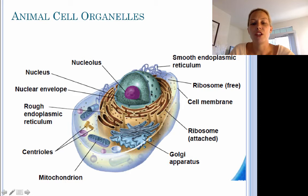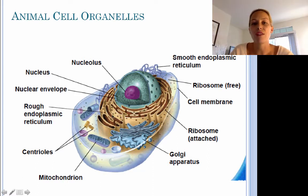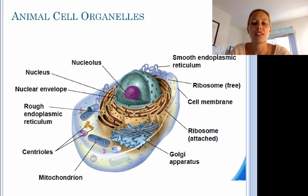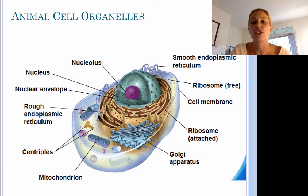The nuclear envelope is a membrane that holds the genetic information. Beyond the nucleus, we have the rough endoplasmic reticulum. The reason why it's called the rough endoplasmic reticulum is because it has ribosomes on it — we can see attached ribosomes on it. Next, we have our centrioles, which are usually located near the nucleus and are responsible for organization during cell division, pulling chromosomes apart and making sure each new daughter cell gets its own set of genetic information.